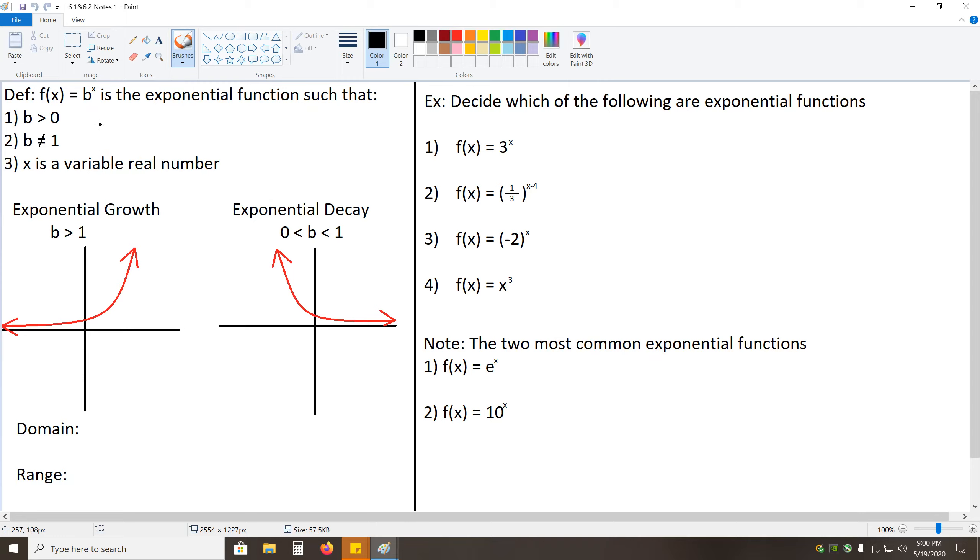So an exponential function means that we're taking some constant, like 5, and raising it to a variable power, x. So 5 to the x power would be an exponential function. Why is this useful? Well, graphs sometimes follow what we call exponential growth or exponential decay. So it's useful for us to be able to model those graphs using a function, just like we would model a parabola using a function based on x squared, a quadratic function.